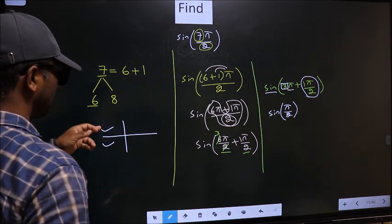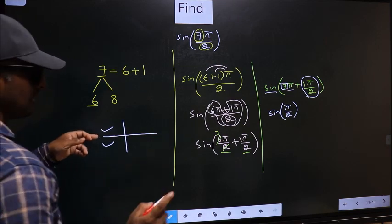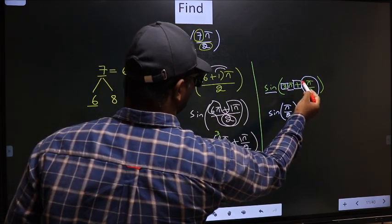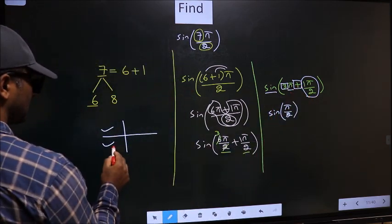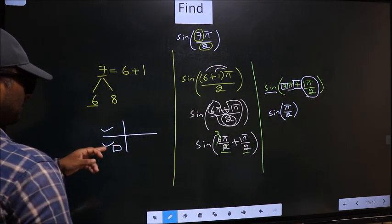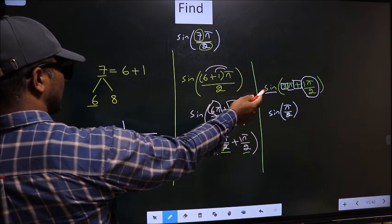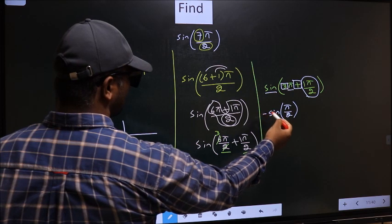Now to check in which quadrant it lies, we should look at this symbol. Here we have plus. So the angle lies in the third quadrant. And in the third quadrant, sine is negative. So you put minus.